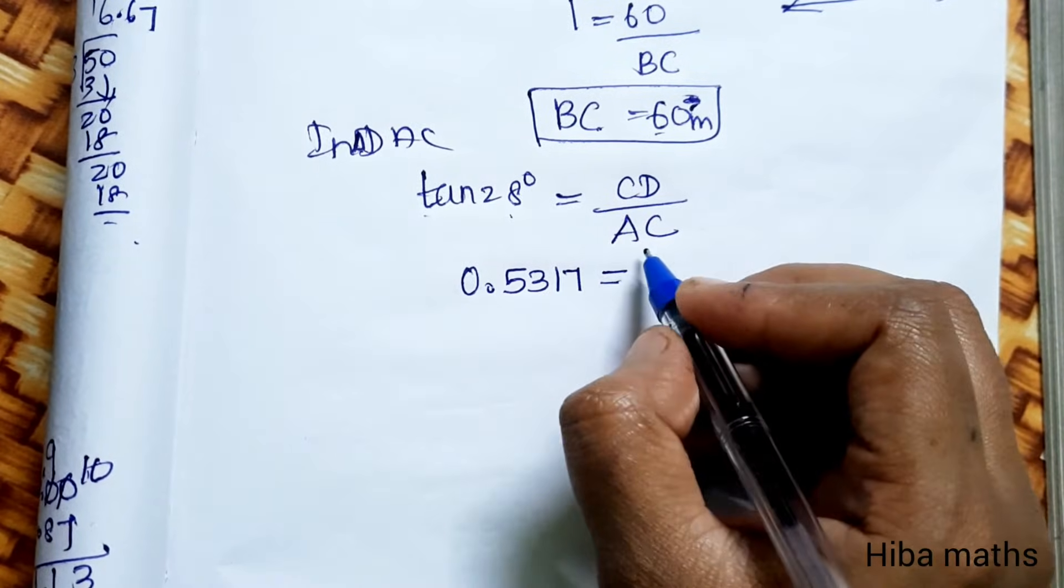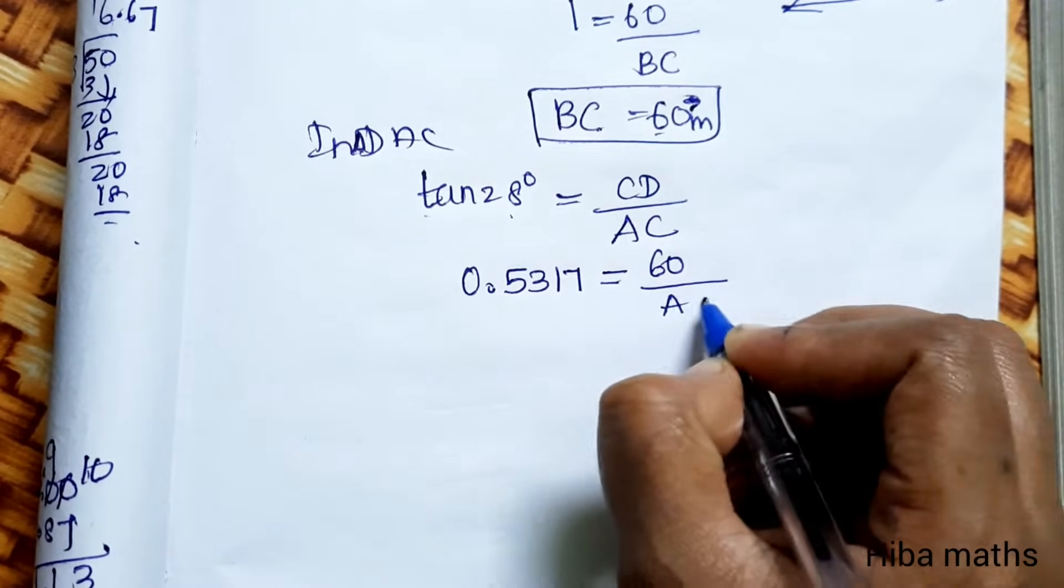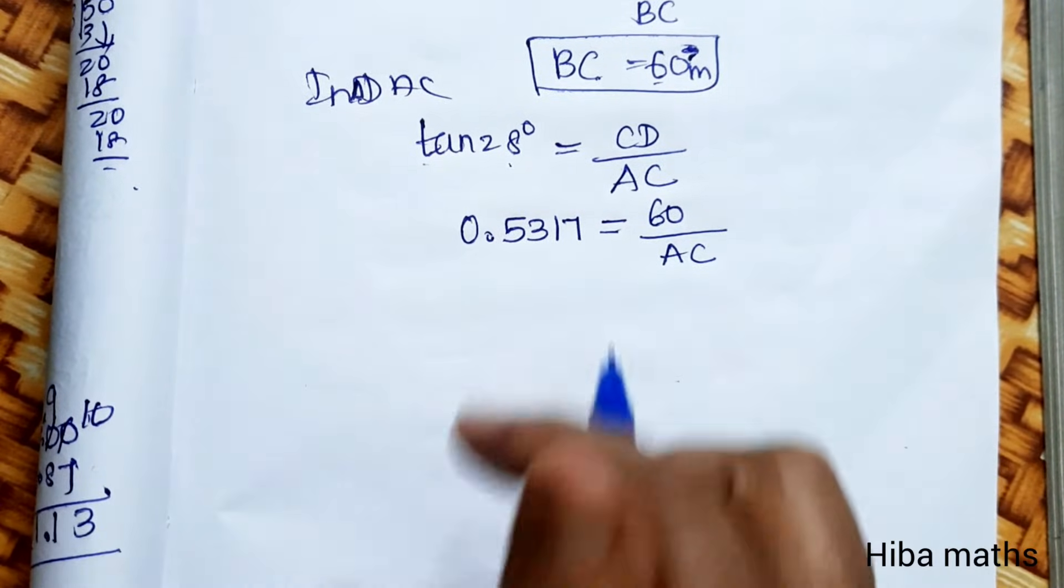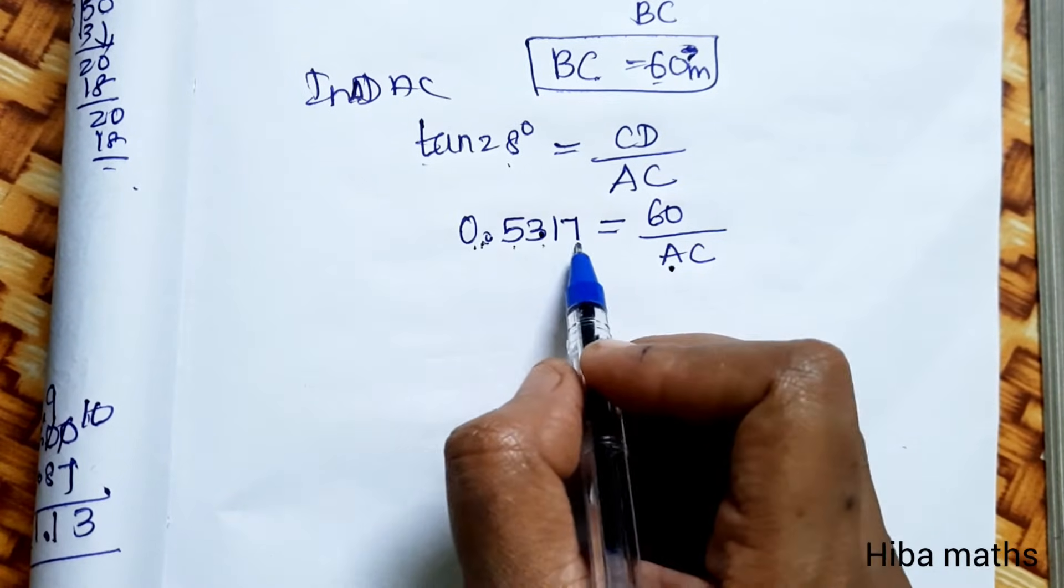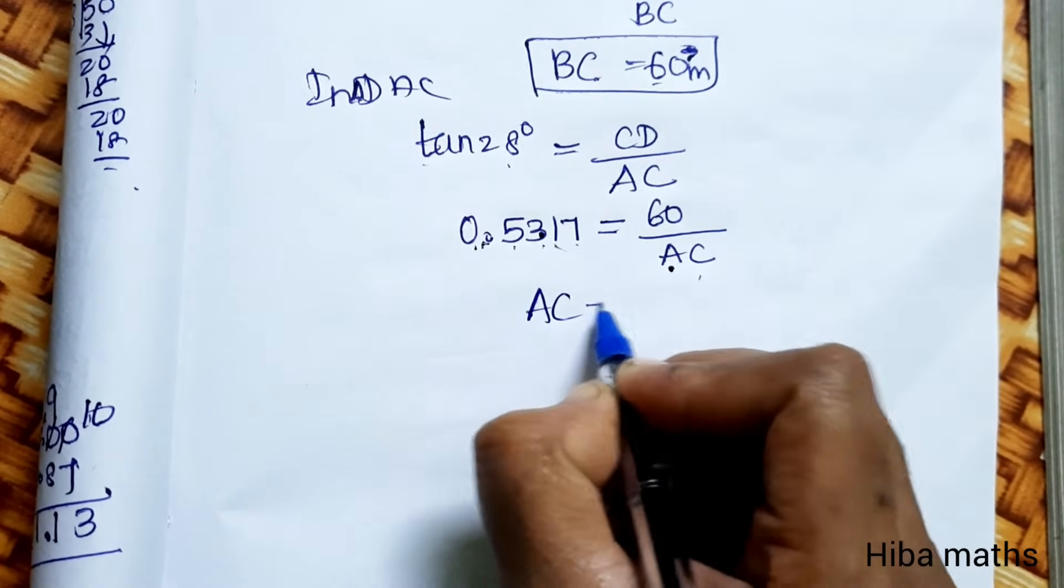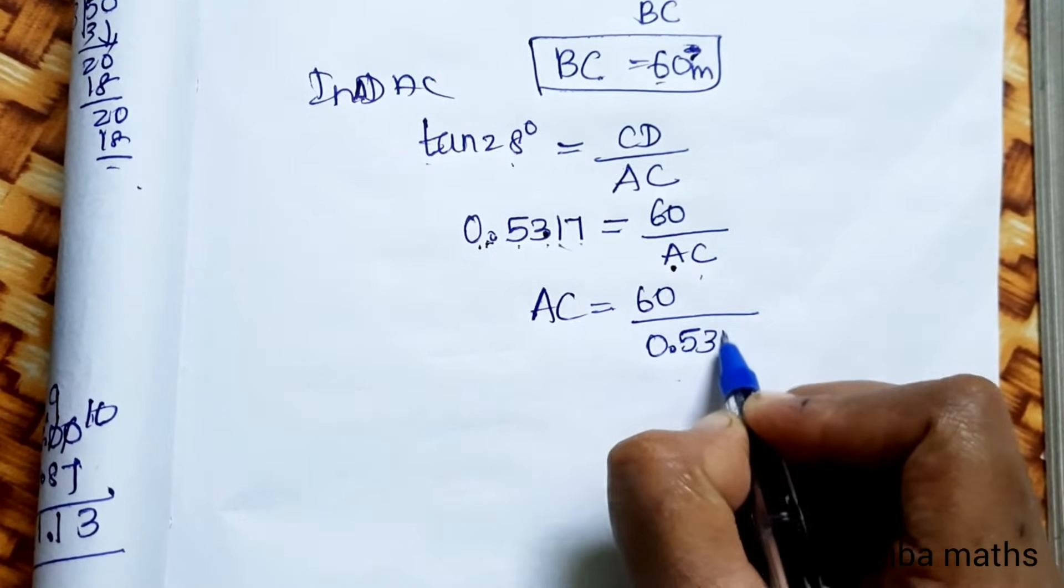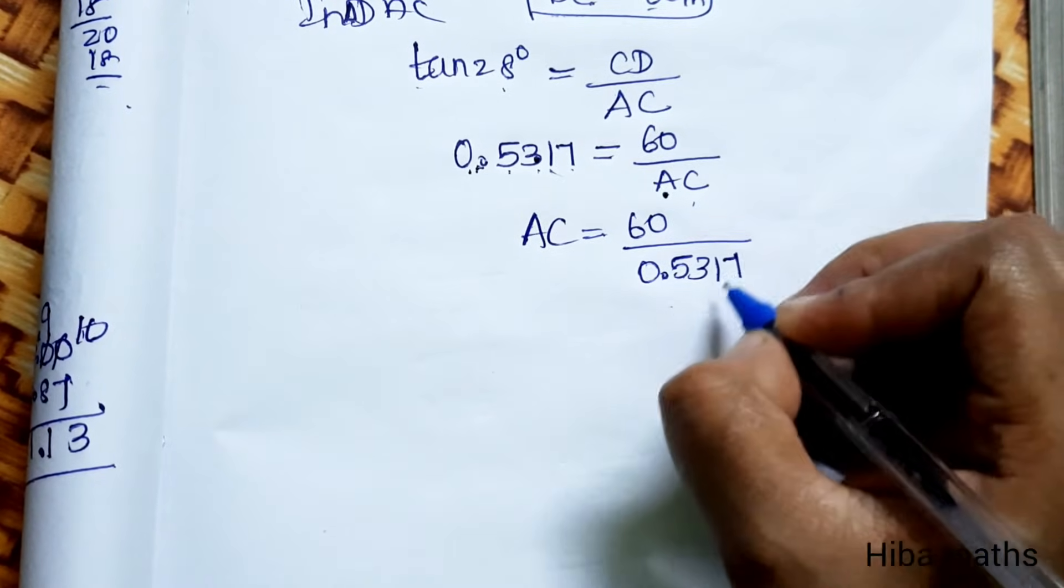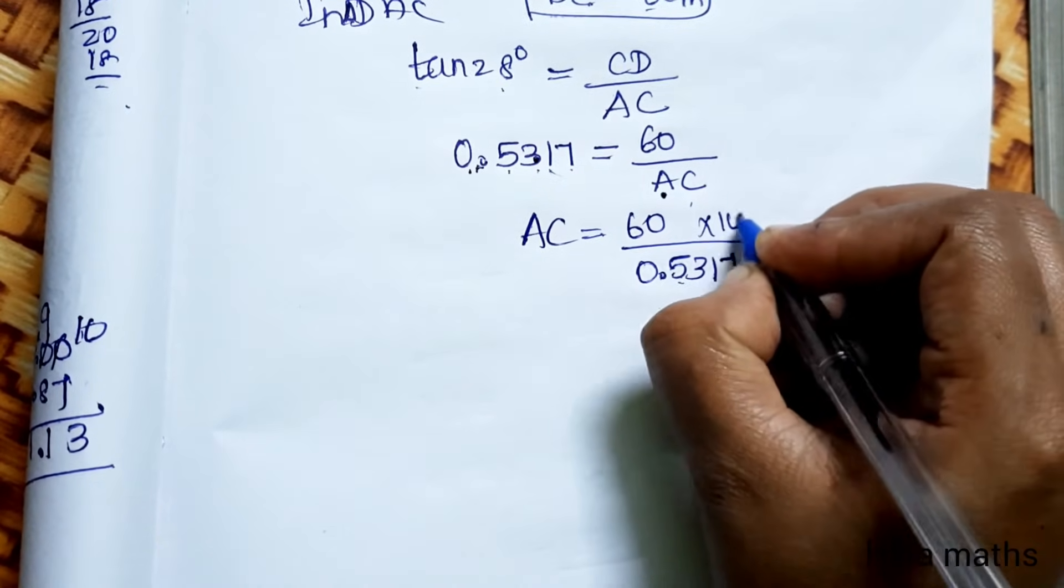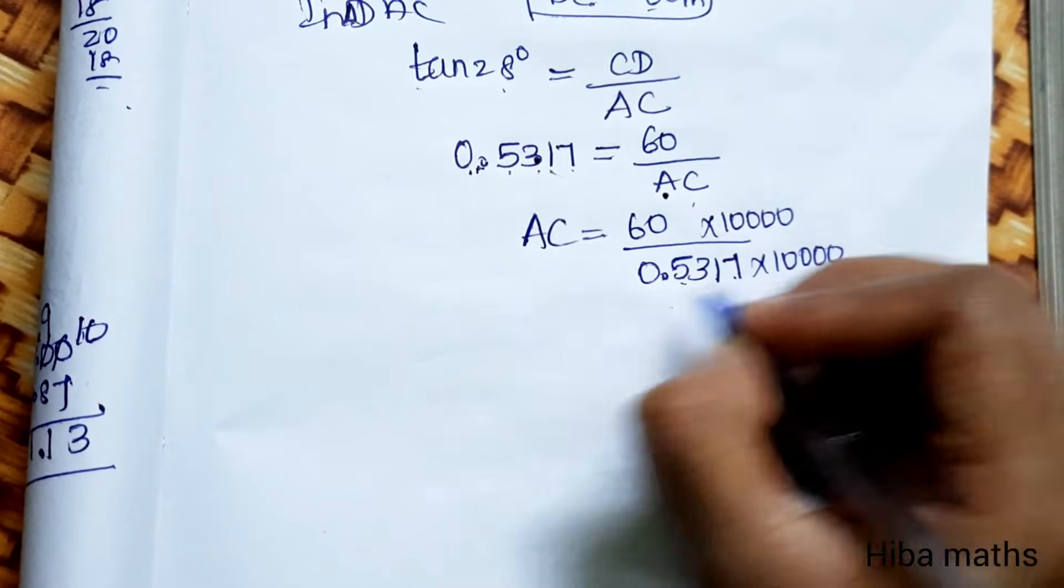That is equal to CD value 60 divided by AC. Now cross multiply. AC into 0.5317 is equal to 60 divided by 0.5317. Now what do we do? Divide. There are 4 number points 1, 2, 3, 4. That is equal to 10,000. So we do multiply.